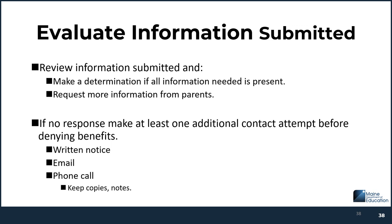Once you've gotten the information, review it. Make a determination if you have enough information. Request more information from the parents if you don't. If there's no response, you're required to make at least one additional contact attempt before denying benefits — you can write another letter, email, or phone call. If you phone call, make sure you record it with that verification notice: for example, 'I called the Smith family on Monday, October 30th and asked them to contact me by November 2nd.' If that's the case, on November 3rd you're done — the process has ended.